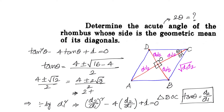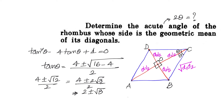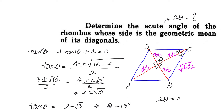Since we are looking at the acute angle, we consider tan θ = 2 - √3. We know tan 15° = 2 - √3, so θ = 15°. Therefore, 2θ = 30 degrees, and the acute angle of the rhombus is 30 degrees.